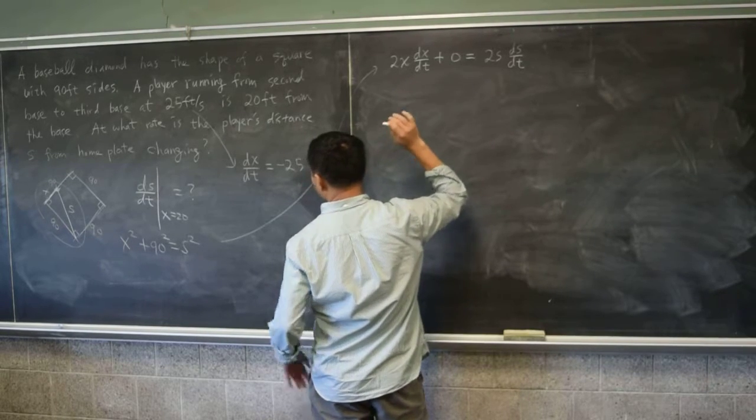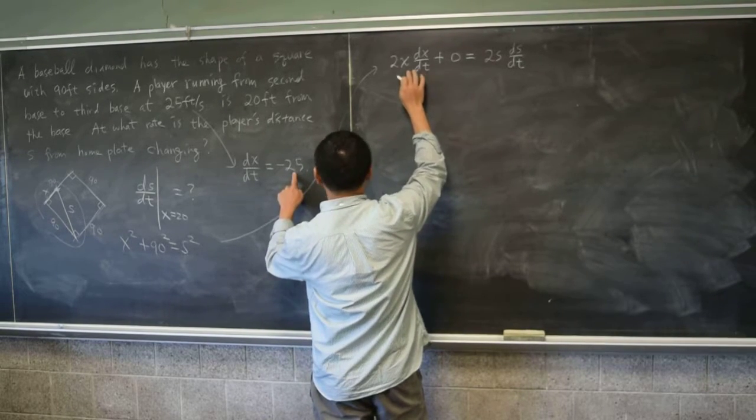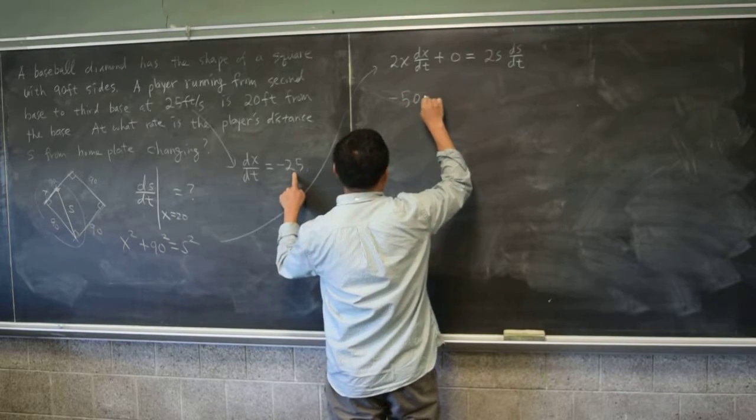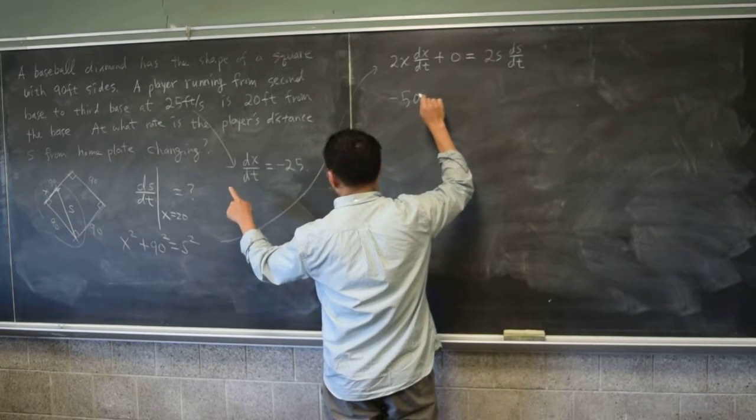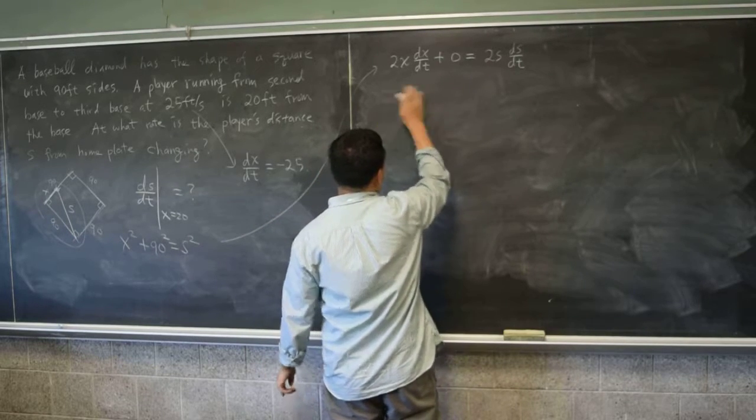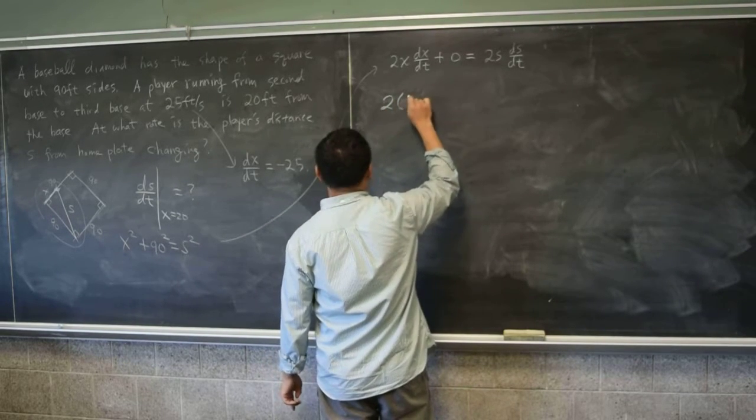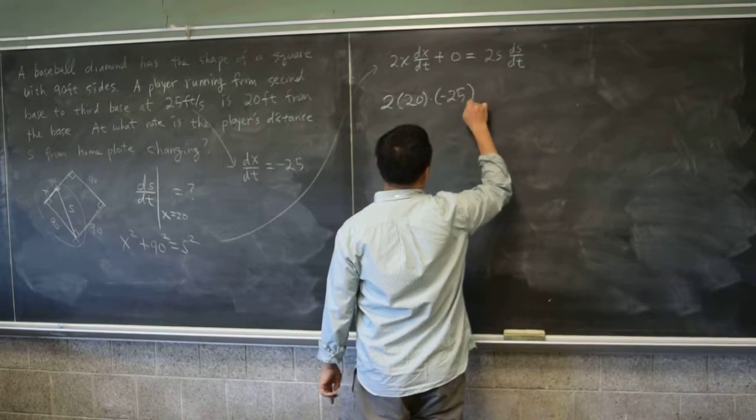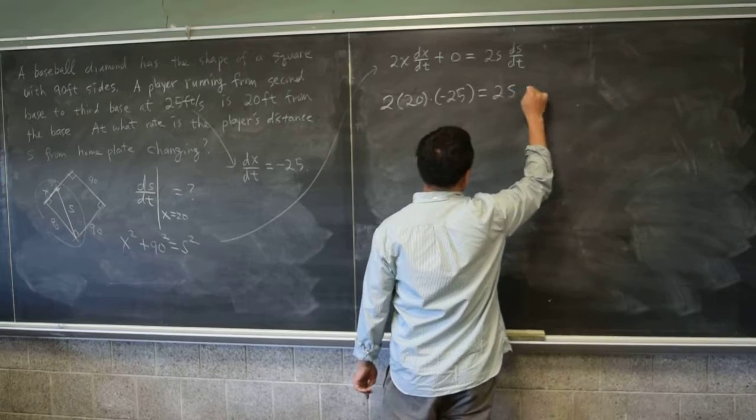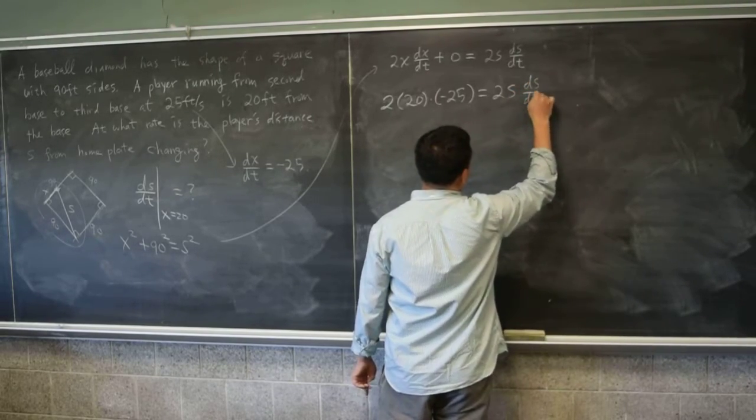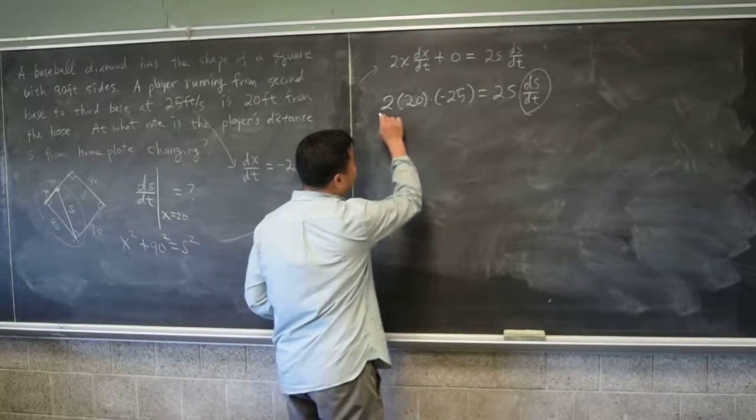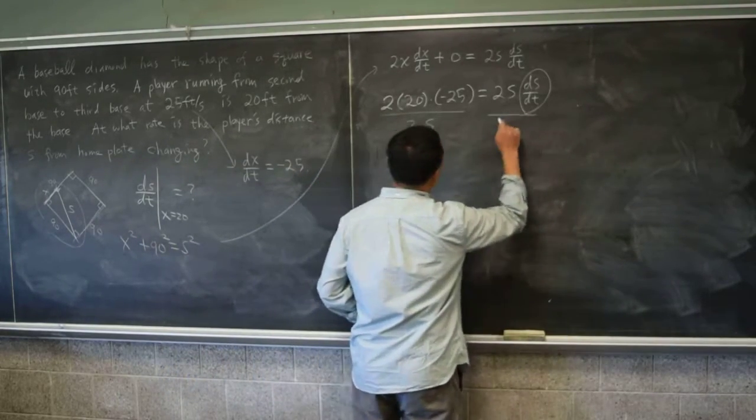Now since you've done the derivative, now you're free to plug this in. And then negative 25 times 2 is negative 50. And then x is 20. Sorry, sorry. 2 times 20 times negative 25 equals to 2 times s times ds/dt. And since you're trying to find out what ds/dt is, you should divide both sides by 2s. 2s.